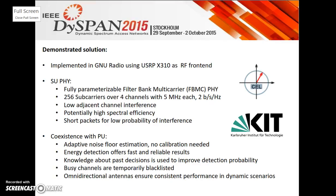We chose short packet lengths for the secondary transmission in order to avoid packet collision at the secondary receiver and also at the primary receiver.